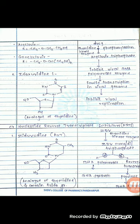Now we are going to see the third category drug: Nucleoside Reverse Transcriptase Inhibitors, short form NRTI. The first drug is zidovudine. This is the structure of zidovudine. The short form of zidovudine is AZT. It is an analog of thymidine.